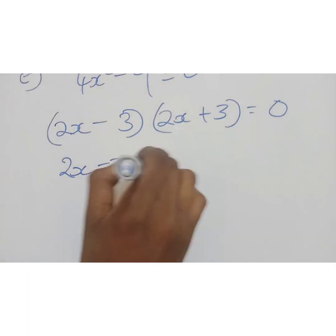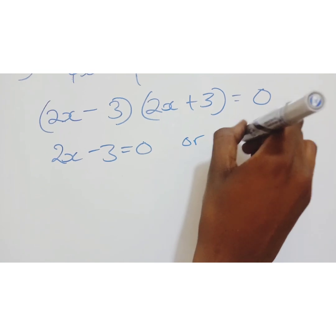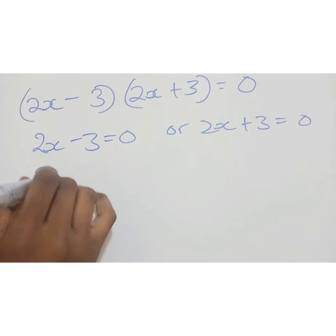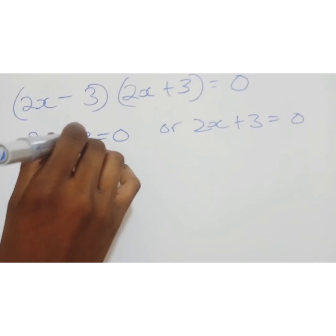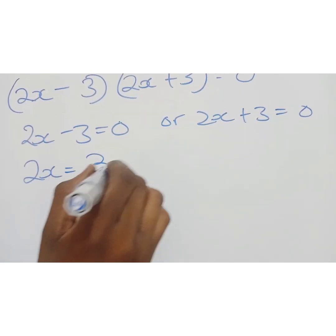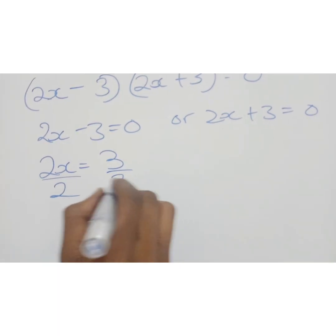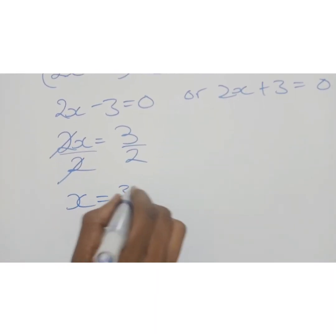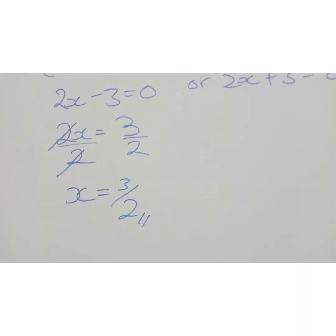You open another bracket with the same numbers, but you just put a positive here. Plus 3 equals 0. So what we do is say, 2x minus 3 equals 0, or 2x plus 3 equals 0. So we have 2x equals, this is negative 3 because the other side becomes positive. So over 2, over 2. So it cancels. x equals 3 over 2. Done. Simple as that.